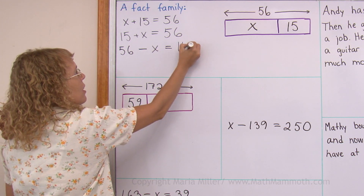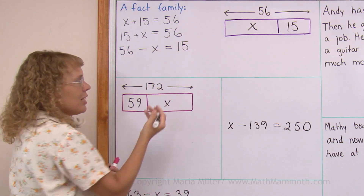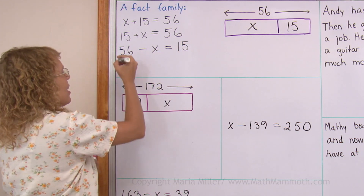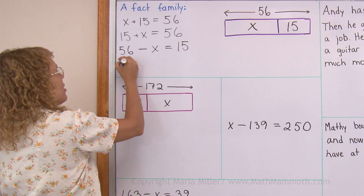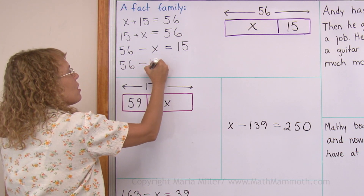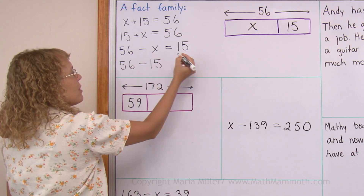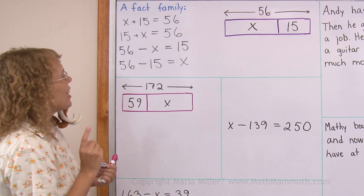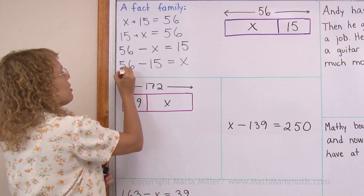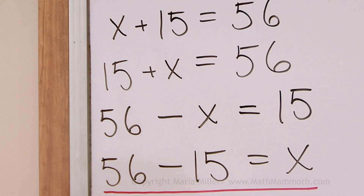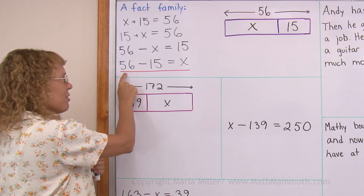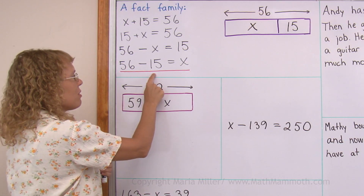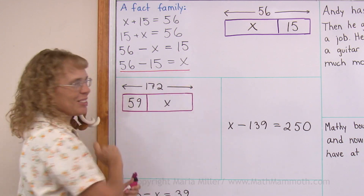Take away one part, the x, and then the part of 15 would be left. And the other subtraction: 56 minus the other part, 15, and then this part would be left. This is the operation you can do to solve for x — you subtract 56 minus 15 and that equals x.